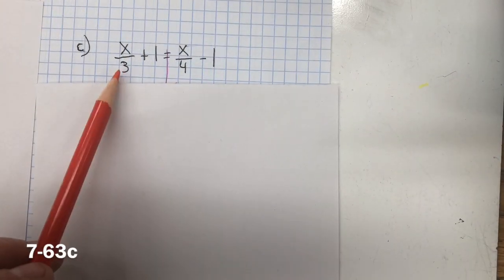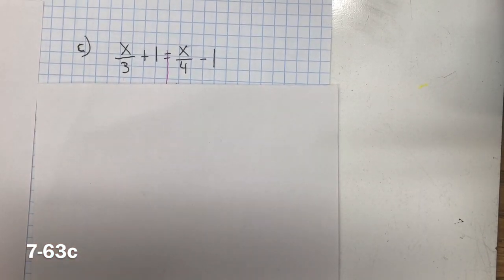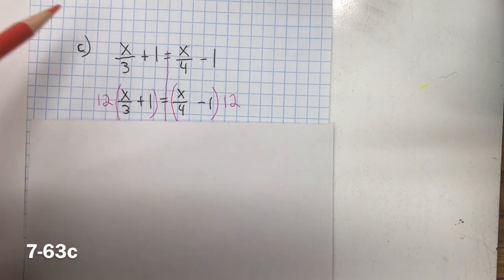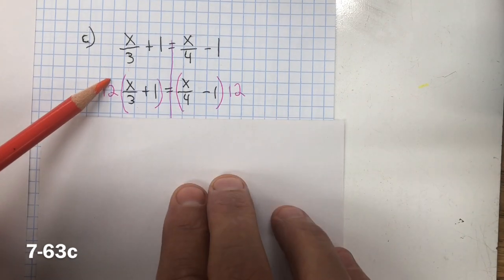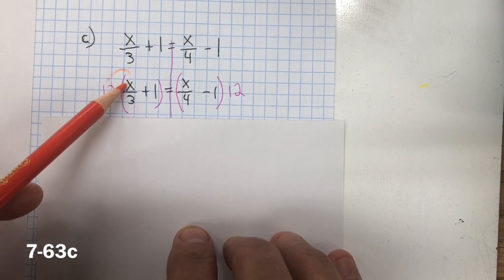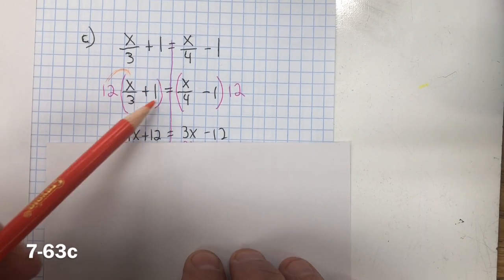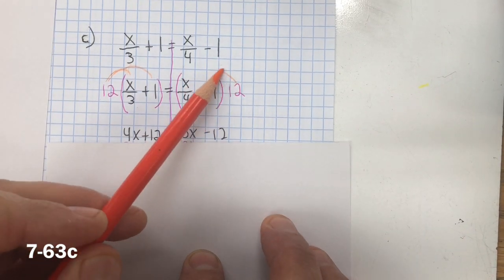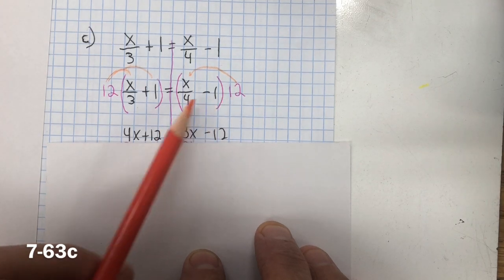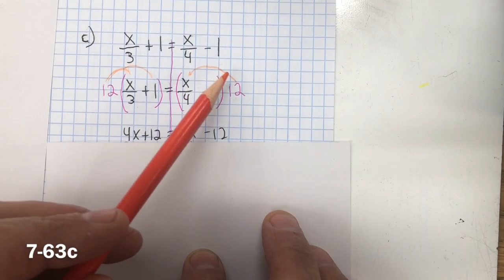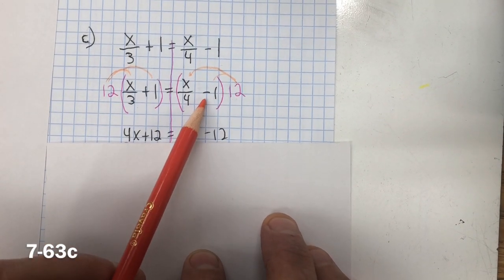For c, we're going to use the fraction buster method to eliminate the denominators. And we want to multiply by the least common multiple of 3 and 4, which is 12. So we're going to multiply every term by 12. For the first term, 12 divided by 3 is 4, 4 multiplied by x is 4x. Distribute to the second term: 12 multiplied by 1 is 12. Then on the other side, 12 divided by 4 is 3, multiplied by x is 3x. And distribute to the second term: 12 multiplied by negative 1 is negative 12.